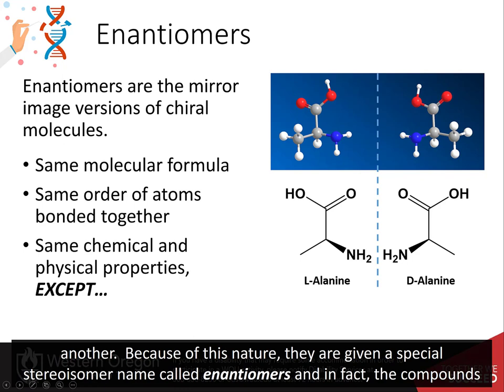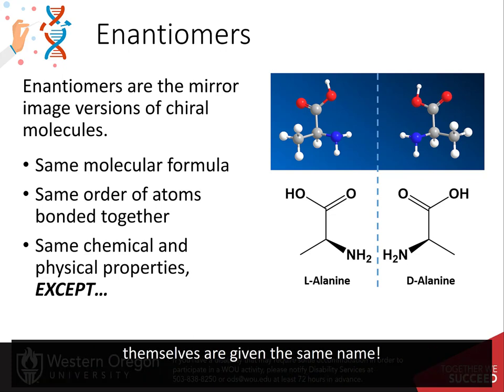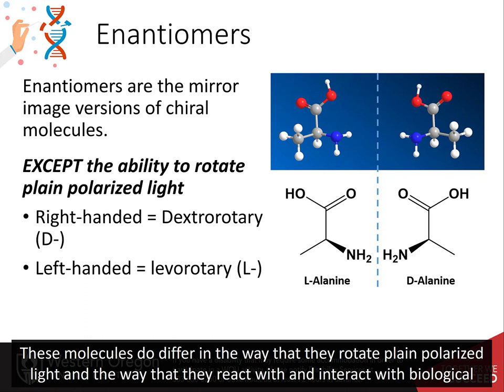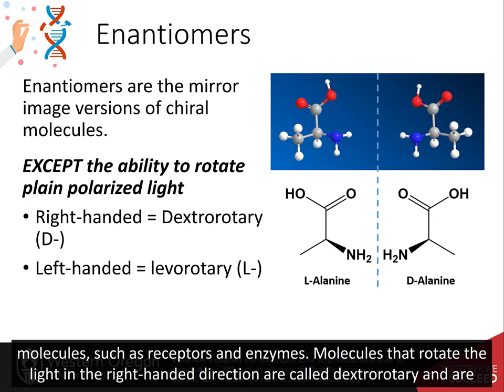Because of this nature, they are given special stereoisomer names called enantiomers, and in fact the compounds themselves are given the same name. These molecules do differ in the way that they rotate plane-polarized light and the way that they react and interact with biological molecules, such as receptors and enzymes.